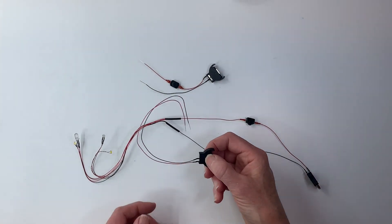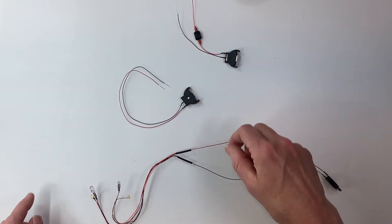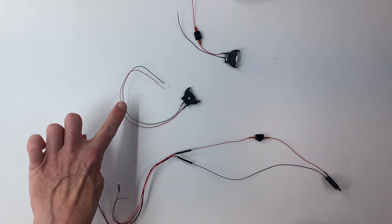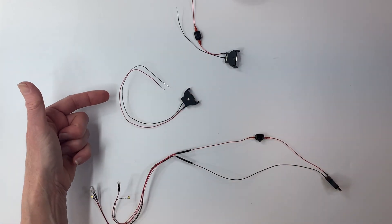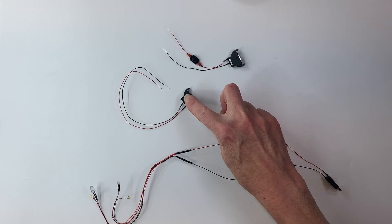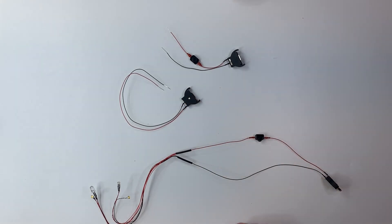We also have a coin cell holder with no switch that you can get. Now if you don't have a switch, your lights won't be able to be turned off without removing the coin cell, but we do have a variety of switches if you want a different style switch. And I'll put a link to some of our other switches in the comments below.